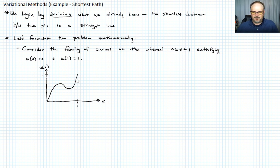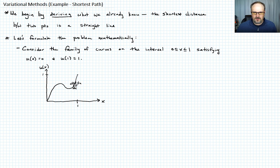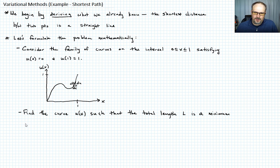We can have some curve that looks like that. What we want to do is look at the slope of this line. If I take this slope and make my triangle, this is du and this is dx, and then this distance is ds. I want to find the curve u of x such that the total length L is a minimum.